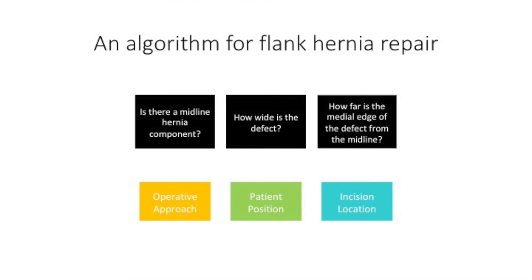Based on these data, we developed an algorithm using preoperative hernia characteristics to guide the choice of operative approach, patient position, and incision location for flank hernia repair. This algorithm incorporates three questions. First, does the flank hernia have a midline component? Second, how wide is the flank defect? Third, how far is the medial edge of the defect from the midline?